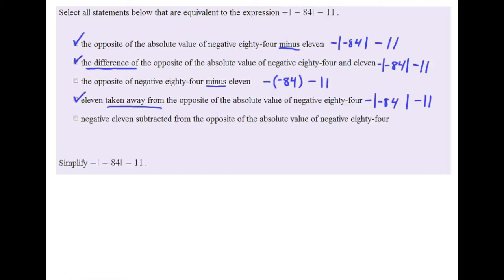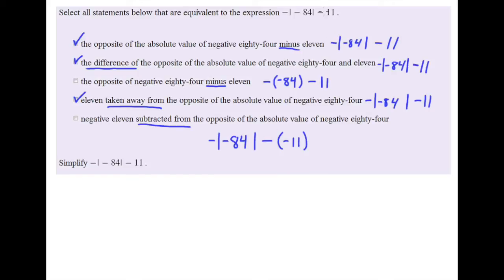Finally: negative 11 subtracted from the opposite of the absolute value of negative 84. 'Subtracted from' means we flip the order, so the minus sign goes here, with the opposite of the absolute value of negative 84 in front. But what's being subtracted is negative 11 — in parentheses. Up in the original expression we're subtracting positive 11, but here we're subtracting negative 11, so we do not check that box.